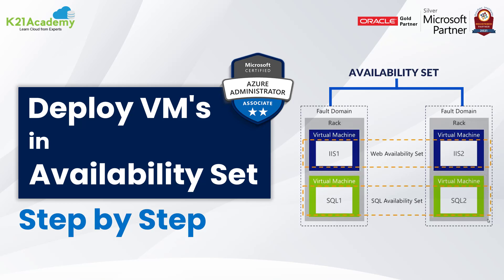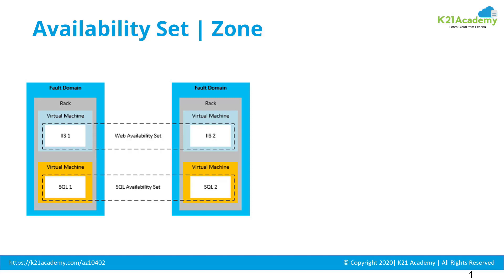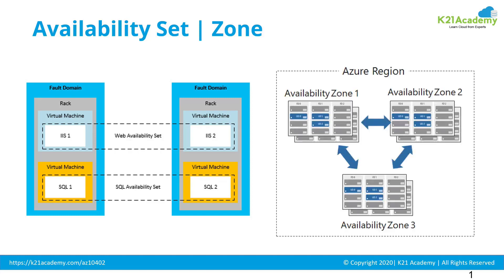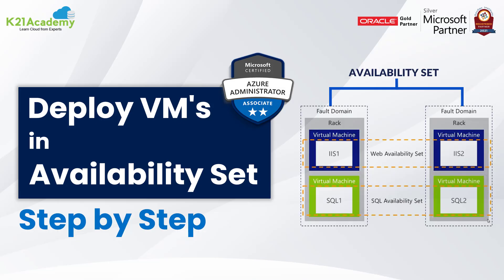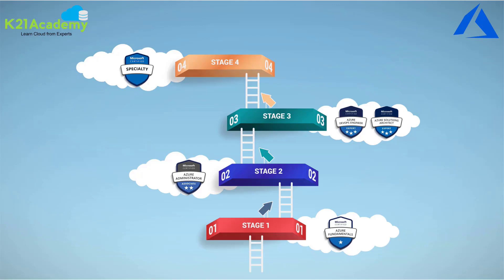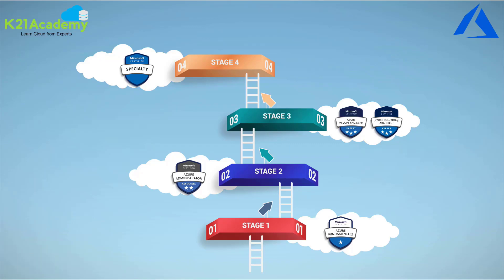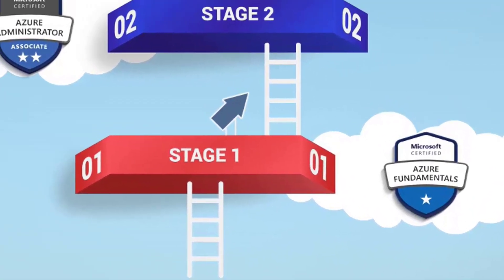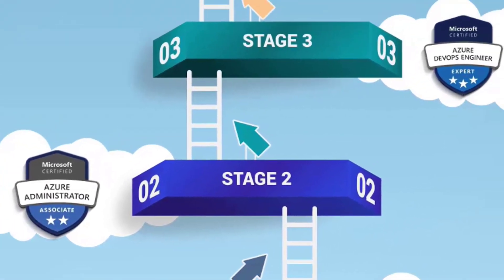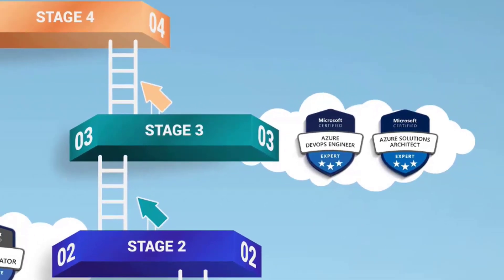How to configure two virtual machines across fault domains in an availability set for 99.95% uptime, or deploying two machines across availability zones for 99.99% uptime. We are going to look at a step-by-step procedure to deploy virtual machines in an availability set for high availability. Welcome to another episode of a weekly video series with me, Atul Kumar from K2N Academy, where we take you on your journey to cloud — from complete beginner at stage one, to Azure fundamentals, stage two as administrator, all the way to stage three as DevOps or Azure Solutions Architect.